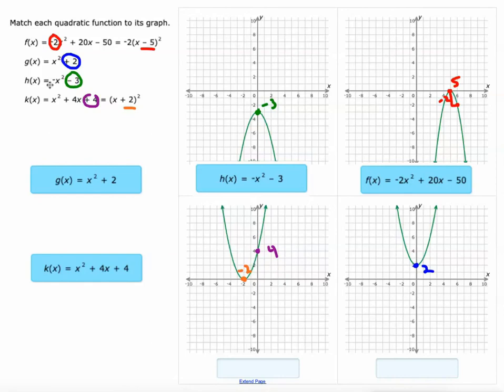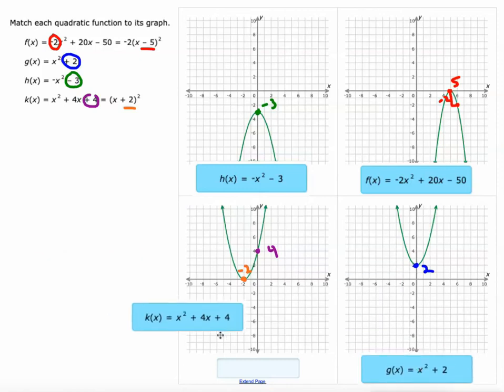So g(x) is the one with y-intercept of positive 2 and k(x) is the one with y-intercept of 4.